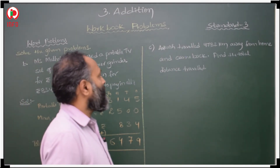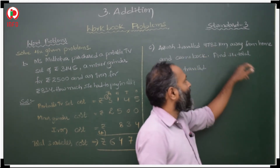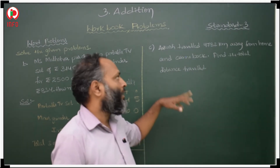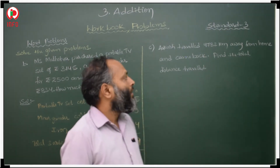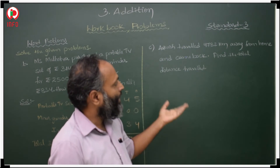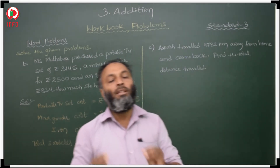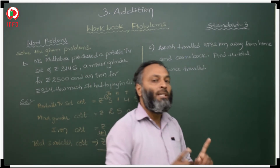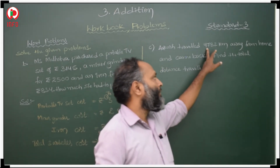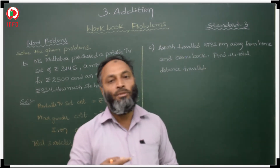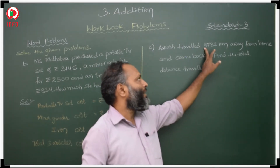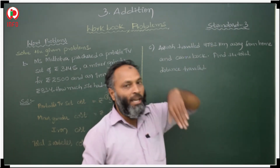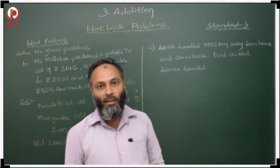Next question: Aapash travelled 4382 kilometres away from home and came back. Coming back means he travels the same distance again. So we have to add 4782 kilometres two times — we add this quantity twice. This we have to understand.